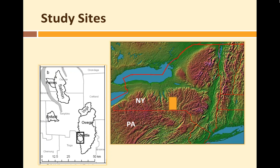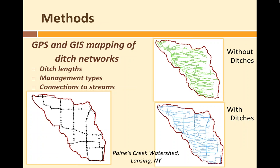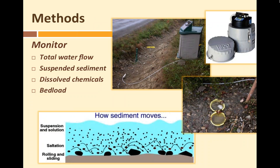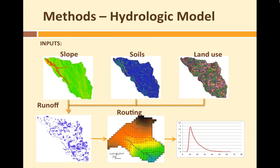We have worked across nine separate watersheds in central New York. We start by mapping all the ditches within a given watershed — their lengths, management types (whether scraped, exposed, or rocky), and how they connect to streams. We monitor using ISCO automated water samplers to capture storm events, looking at total water flow, suspended sediment, dissolved chemicals, and bed load — rocks and gravel too heavy to enter the water column that bounce along the bottom. We also do modeling to figure out how different factors contribute to watershed hydrology and upscale from our sampled ditches.